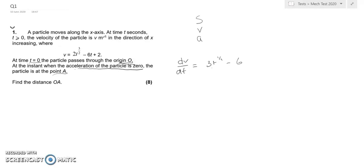That's acceleration. And we're told that at the instant when the acceleration of the particle is 0, we want to make this equal to 0. So t must be equal to 6 over 3, which is 2 squared, which is 4. So t equals 4.